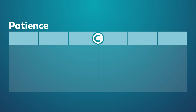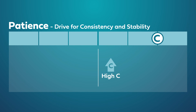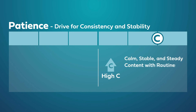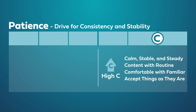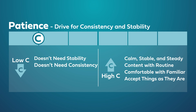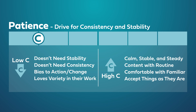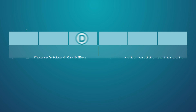Patience, identified by the letter C, is the drive to have consistency and stability in one's environment. A person with a high C is calm, stable, and steady — they are often content to perform routine tasks over a long period of time and are most comfortable with the familiar, accepting of things exactly as they are. A person with a low C doesn't have a need for stability and consistency. Instead, they often have a bias for action or change, and anything that brings a little variety to the picture is a welcoming part of their work.